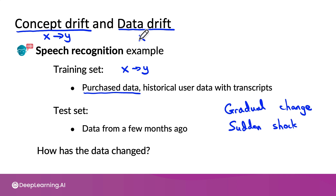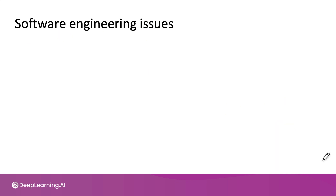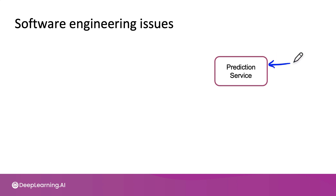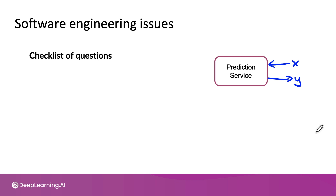In addition to managing changes to the data, a second set of issues you will have to manage to deploy a system successfully are software engineering issues. When you are implementing a prediction service whose job it is to take queries X and output predictions Y, you have a lot of design choices. Here's a checklist of questions that might help you make the appropriate decisions.